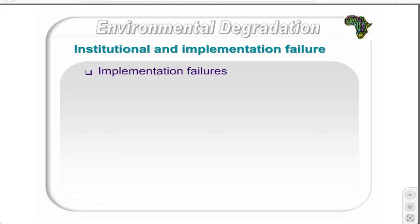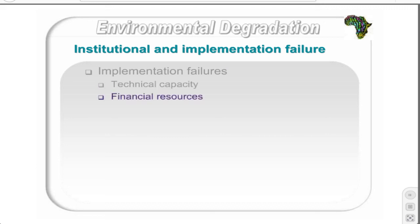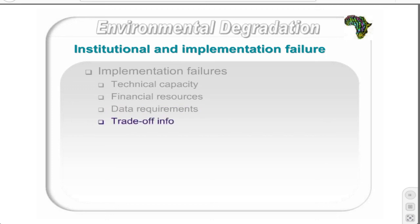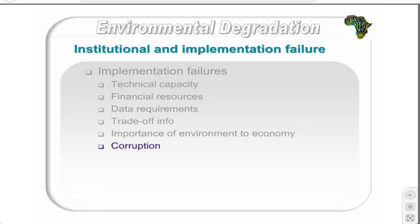Institutions are necessary but cannot be effective without effective implementation. Implementation failures occur due to a lack of technical capacity or skilled staff and insufficient financial resources. Other causes include the lack of data on the resource base, lack of knowledge of total costs and benefits associated with resource allocation, lack of understanding of the importance of the environment to the economy, and the existence of corruption among implementing agents.